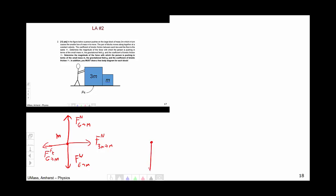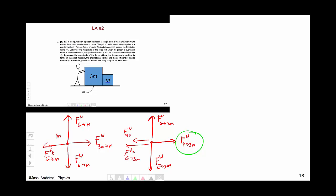Moving on to block 3m, we have the weight from the earth on 3m, the normal force from the ground on 3m, the normal force from the person on 3m (which is ultimately what we're looking for), the force of kinetic friction from the ground on 3m, and the normal force from m on 3m. These last two forces must exist because of a Newton's third law pair—if 3m pushes on m, m pushes on 3m.